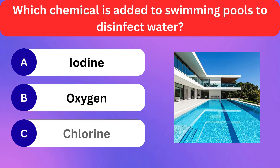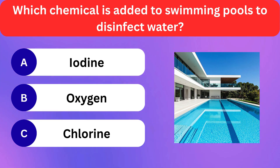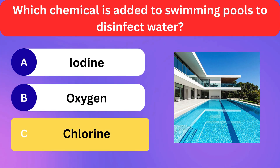Which chemical is added to swimming pools to disinfect water? Iodine, Oxygen, Chlorine. Correct answer is chlorine.